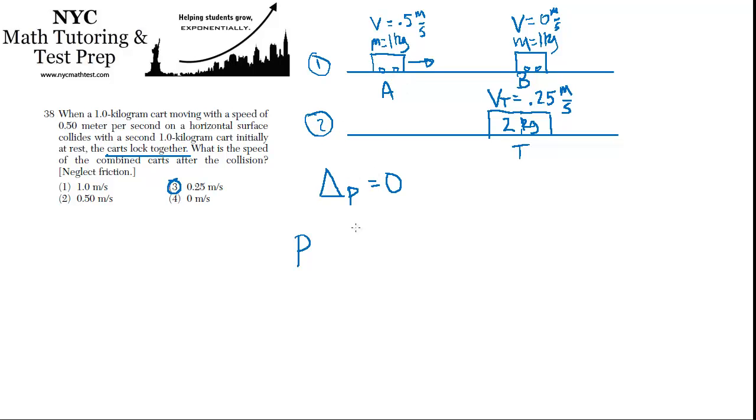So initially, cart A has a certain amount of momentum, and cart B has a certain amount of momentum. So that's the momentum that's initially in the system. That has to equal the momentum that's in the system at the end, which is state two. So we'll say that's the momentum of the total. Okay, so what is the momentum initially that cart one initially has? Well, what is momentum? I'll just do this off to the side.